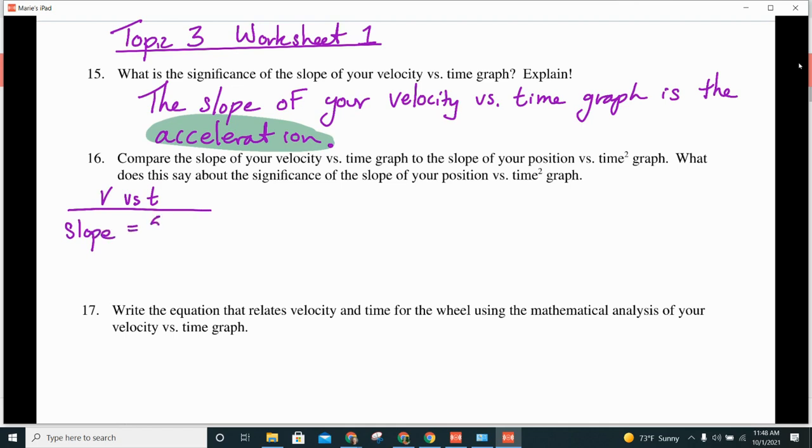5 over 0.5. And what is 5 divided by 0.5? 10. So, that's 10. And then this was in centimeters per second. And this is in seconds. So, our units then would be centimeters per second squared.